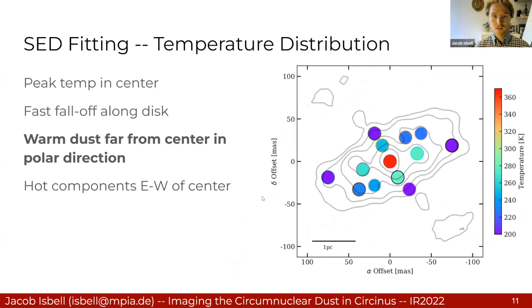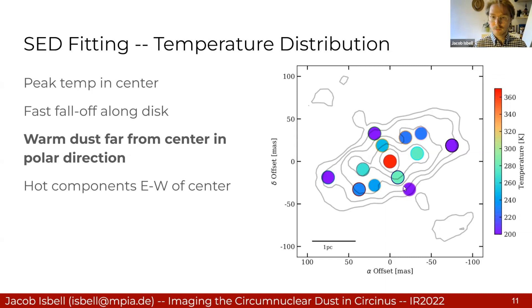Nonetheless, we can take our fitted SEDs and show the fitted temperatures in this map. We find that there's a peak temperature in the center corresponding with our point source, and a very fast fall-off along the disk. In fact, the lowest temperatures we fit are in the disk, very close to the central heating source — somewhat unexpected because you would expect that to happen several parsecs away in the polar dust. Instead, we actually find very warm dust far from the center in the polar direction.